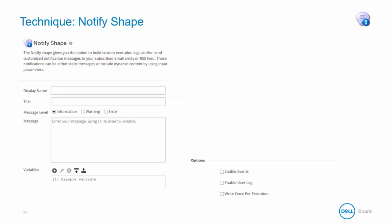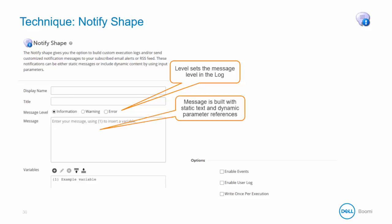Here are the notify properties that can be set. First, you can set the message level information that you want sent. This is important because here you can match what you have set up under users and email alerts so that people are receiving the proper level of information. Next is the message body. This can be made up of static and dynamic content. Parameters are indicated with curly brackets and are used to incorporate dynamic data into the message.